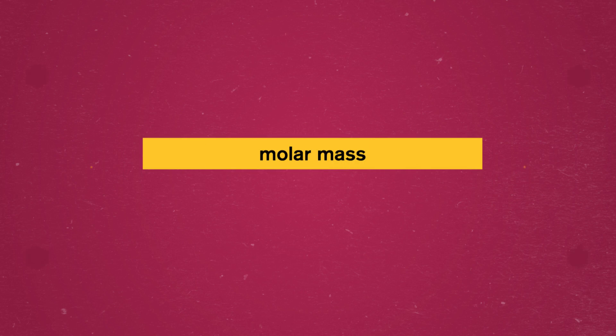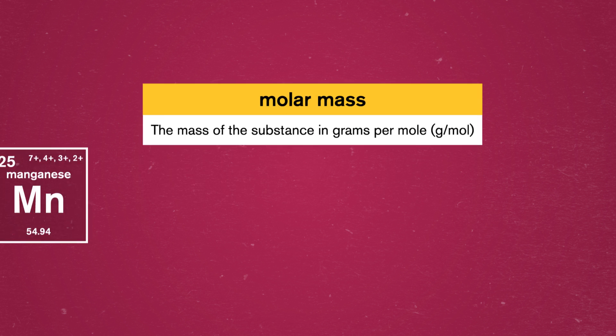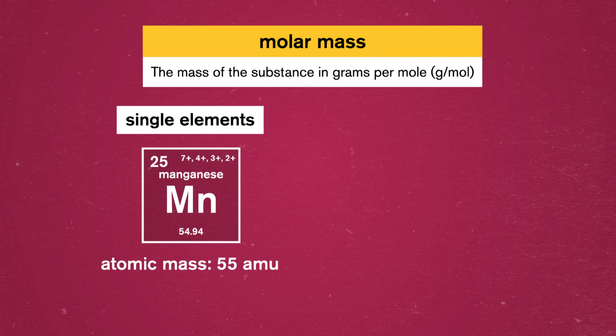To recap, the periodic table lists the atomic mass of every element underneath its chemical symbol. That atomic mass is the mass in atomic mass units, or AMU, of one atom of that element. The molar mass is the mass of the substance in grams per mole. For single elements, the atomic and molar masses are numerically the same, but expressed in different units.